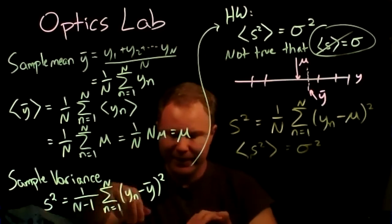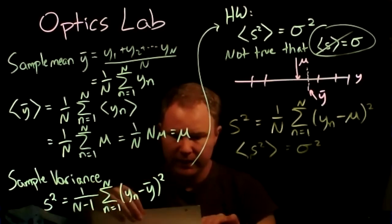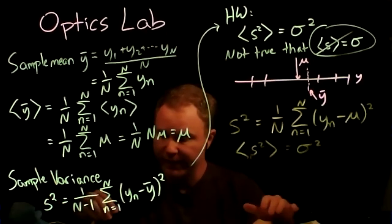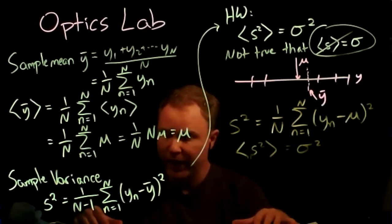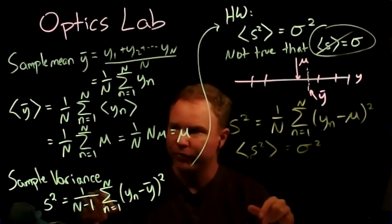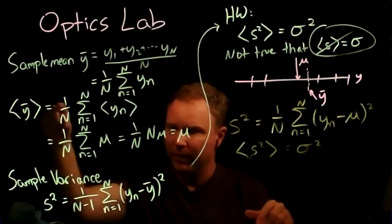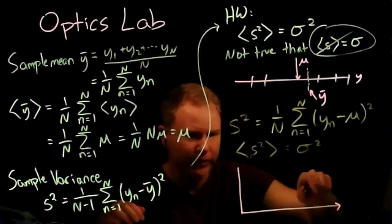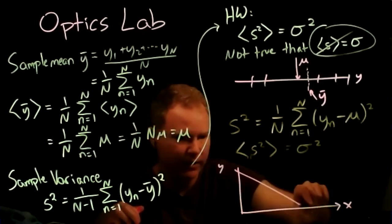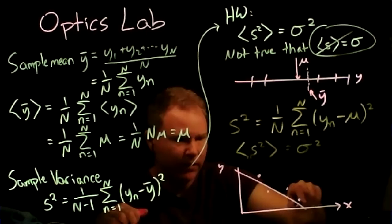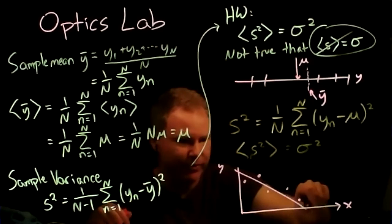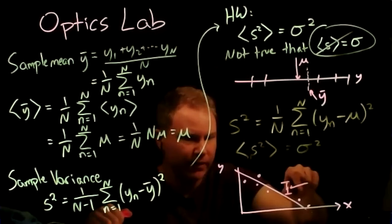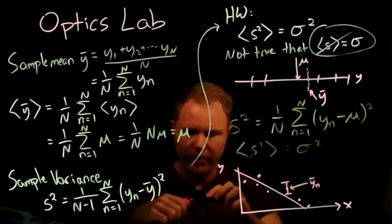Now, as Nicholas pointed out, we have a bunch of measurements and a bunch of means — one mean for each data point. Here's our x-axis (the knob we're turning), our y-axis (the thing we're measuring), and our model line. We have a bunch of means ȳₙ, and we want to determine what error bars to draw on each of them.